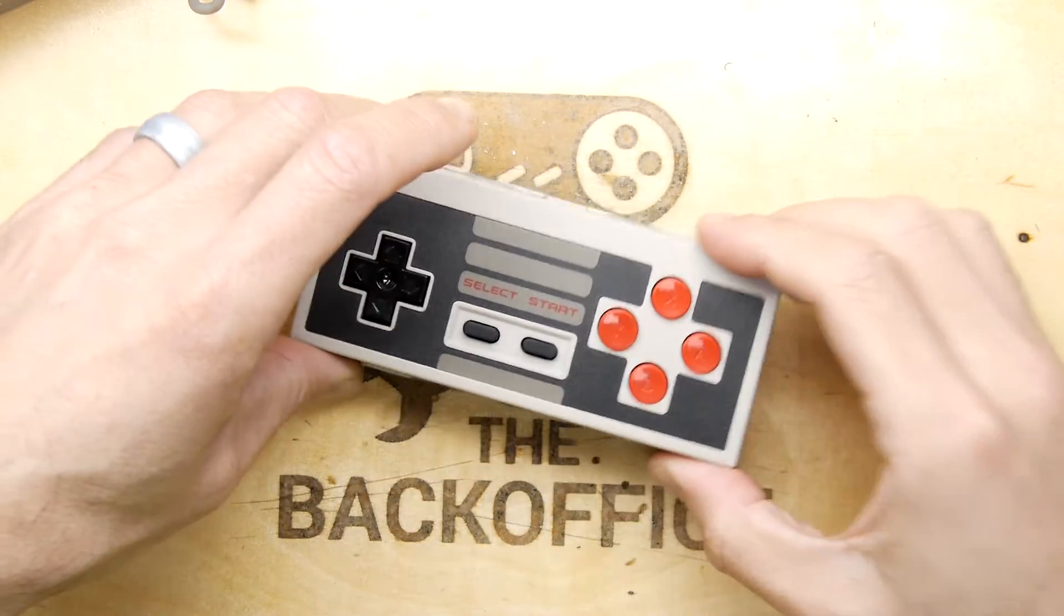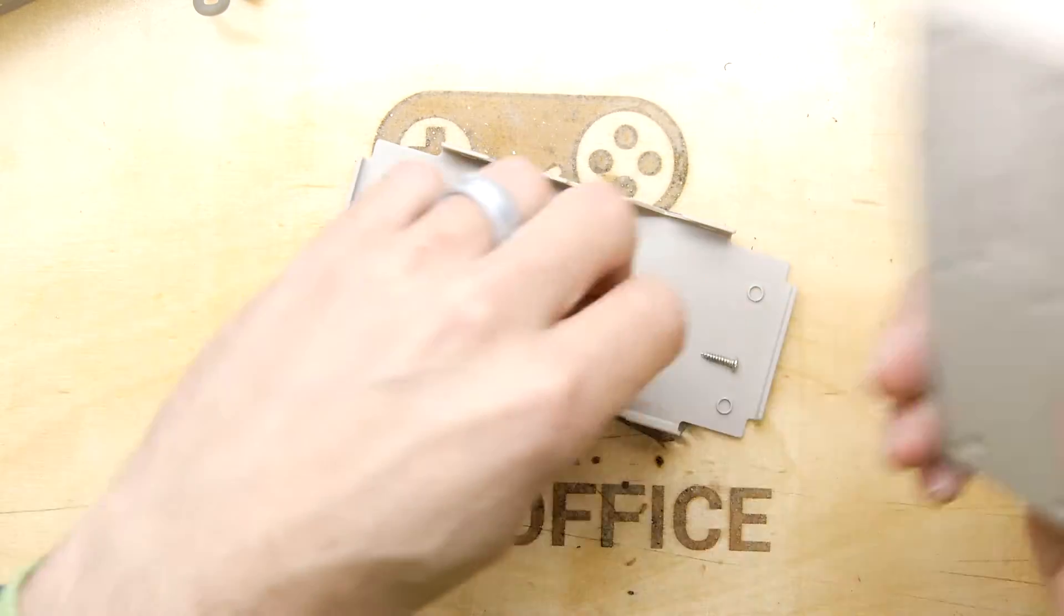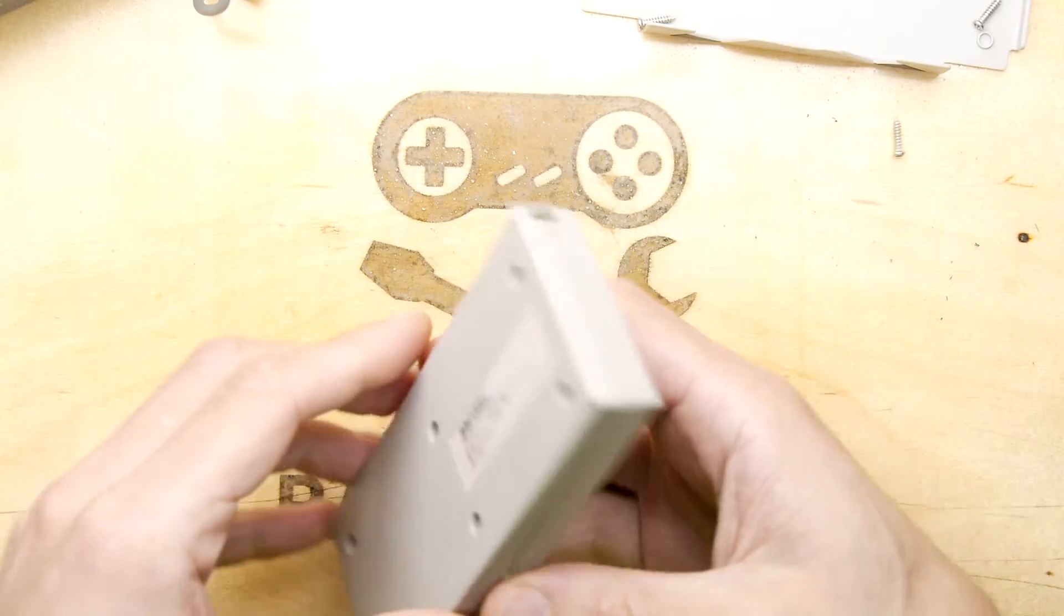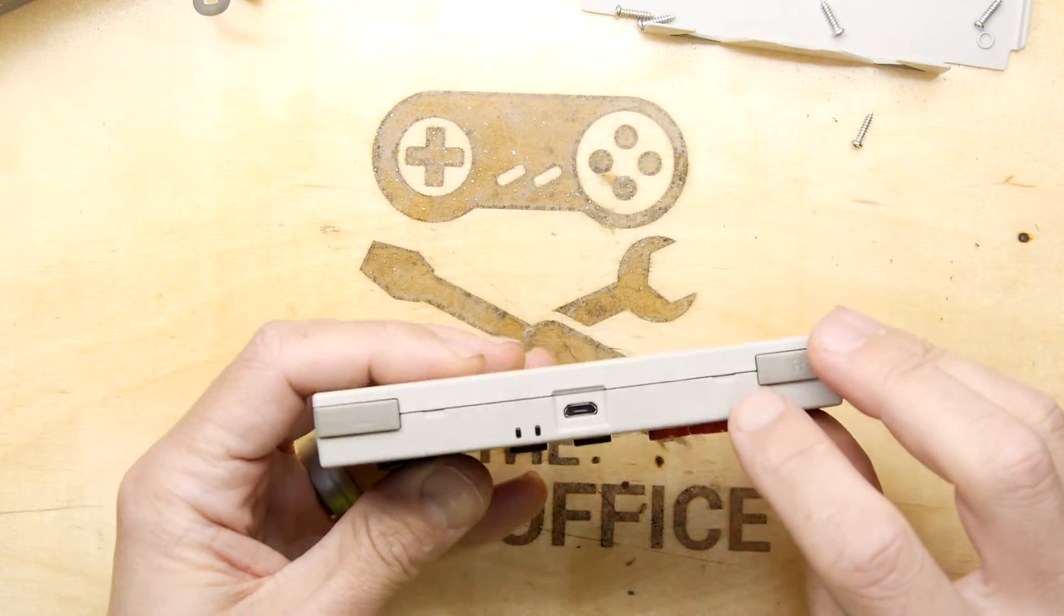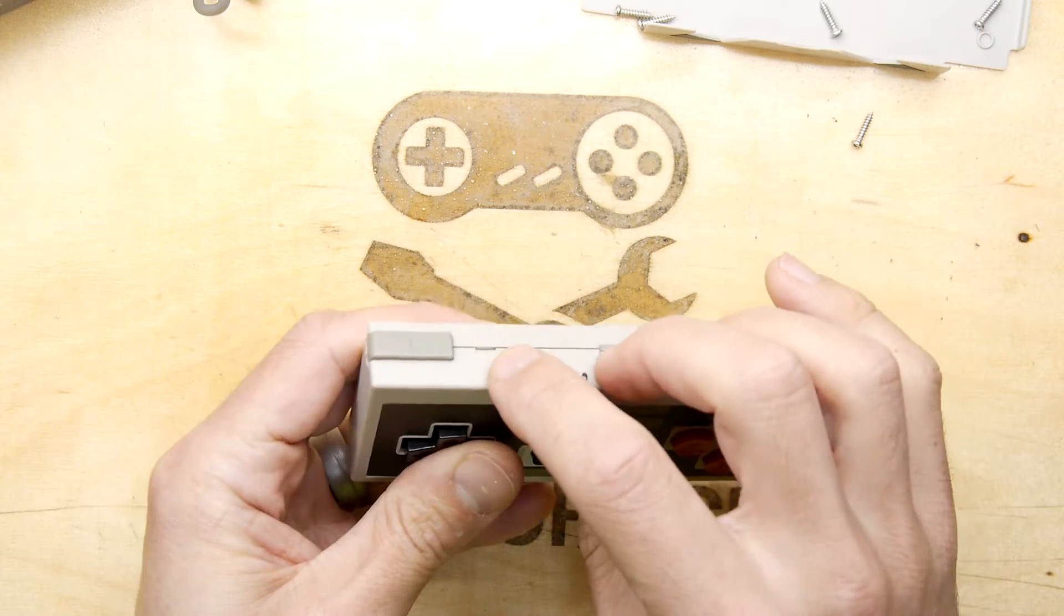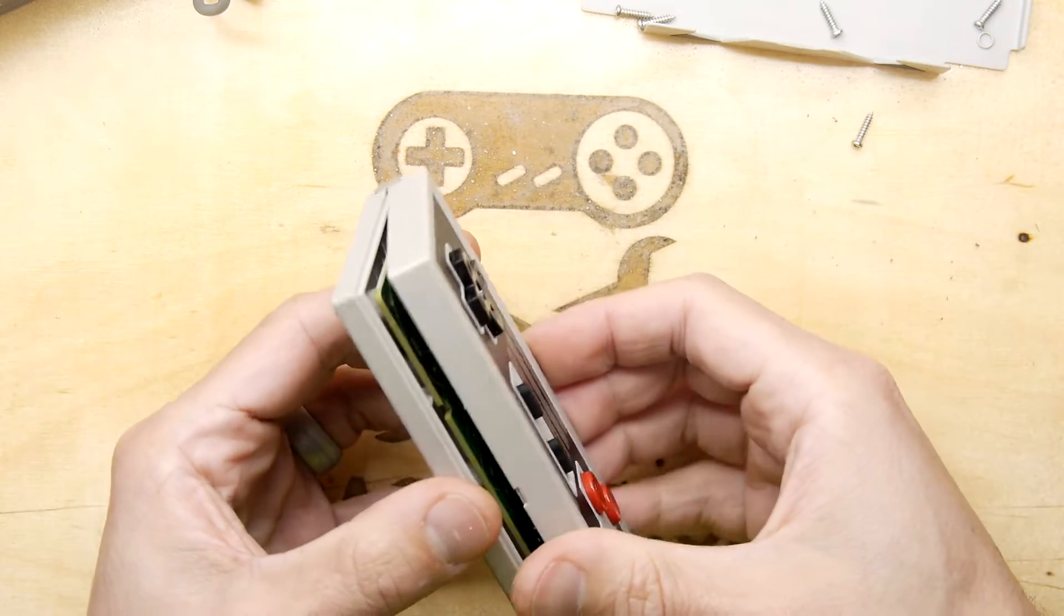So pop that there, catch the screws. Catch them all, gotta catch them. Gotta catch them all. I just noticed these little notches here, you might just see them on the camera, and that's obviously to hold the phone cradle thing.